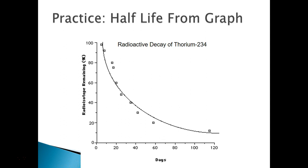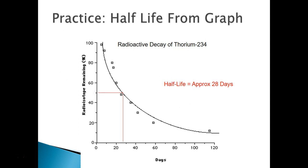Practice: determine the half-life for thorium-234 from the graph. Pause the video and try it. Starting at 100%, half is 50%. Tracing from 50% to the curve and down to the x-axis, the intersection falls between 20 and 30 days, closer to 30 — so the half-life is approximately 28 days. That's it for discussion 2-2 and unit 2. Watch these videos, bring questions to class, and study for your test next week.